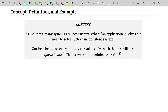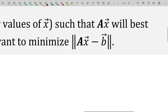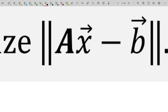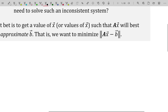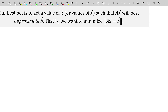This is usually saved for the end of an introductory linear algebra course. As we know, many systems are inconsistent. What if an application involves the need to solve such an inconsistent system? Our best bet is to get a value of X such that AX will best approximate the vector B — that is, we want to minimize the distance between AX and B.